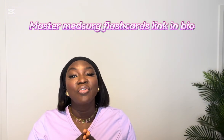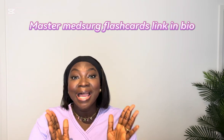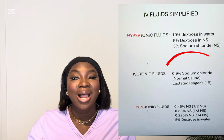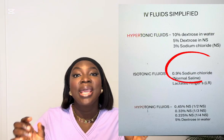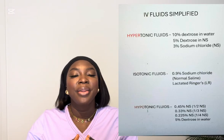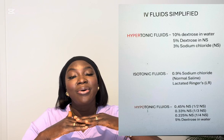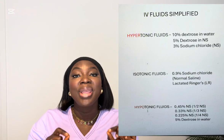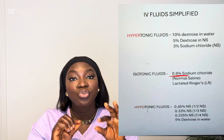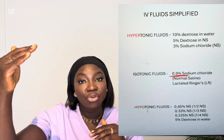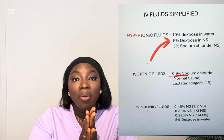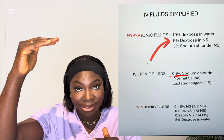0.9 sodium chloride is what is referred to as normal saline. 0.9 normal saline will be our baseline. Pay attention to the number 0.9 because this will be our base number and it will help you to identify if you have hypertonic, hypotonic, or isotonic fluids.